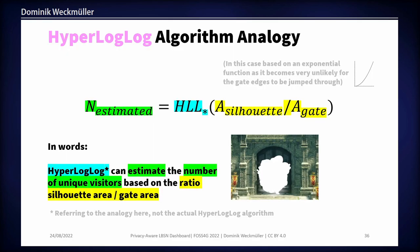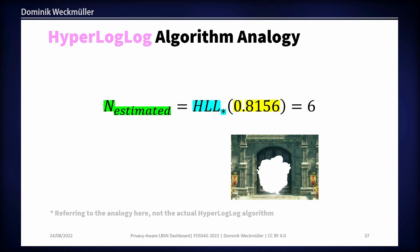What HyperLogLog is capable of — taking this analogy — is brilliant. It can estimate the number of unique visitors solely based on the ratio of the silhouette area to the gate area. So for example, if roughly 80% of the gate is cut out, HyperLogLog could estimate that around six people probably joined the party.